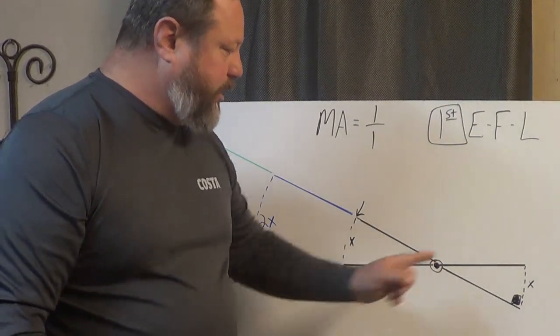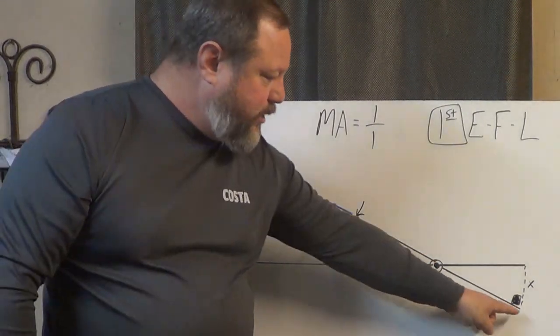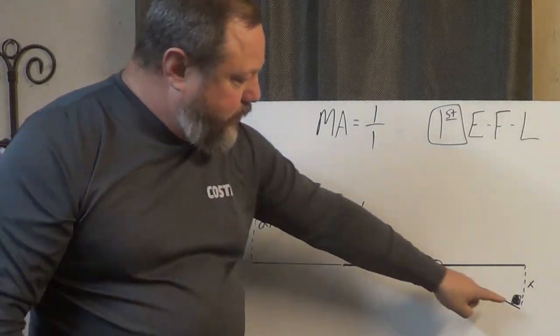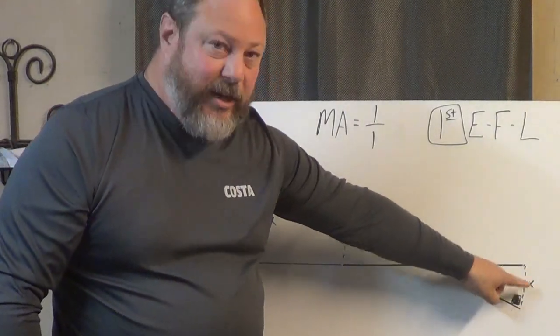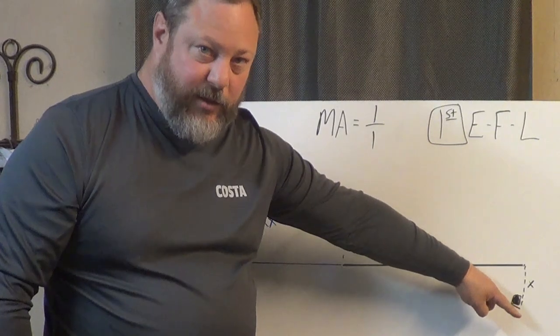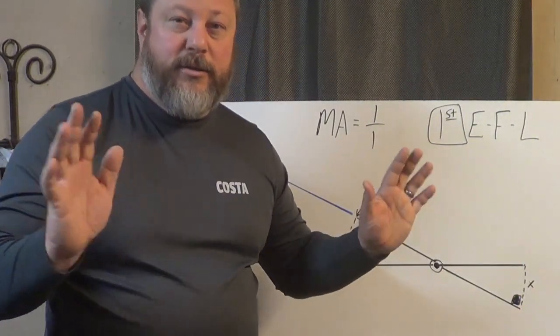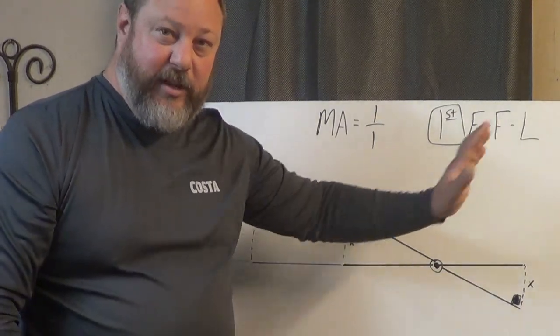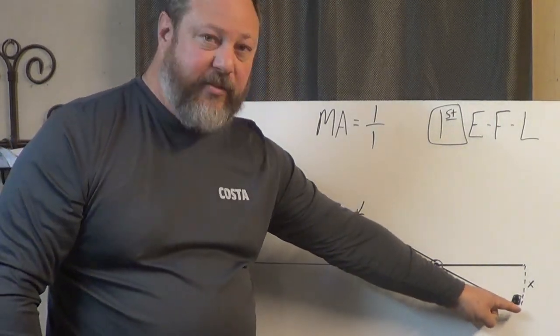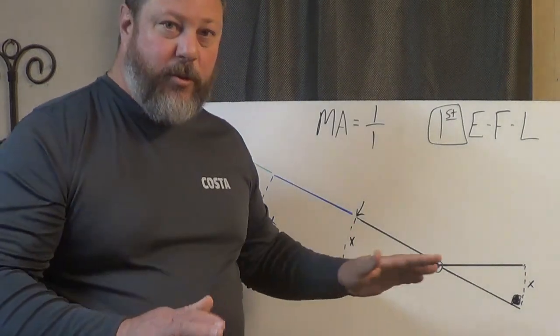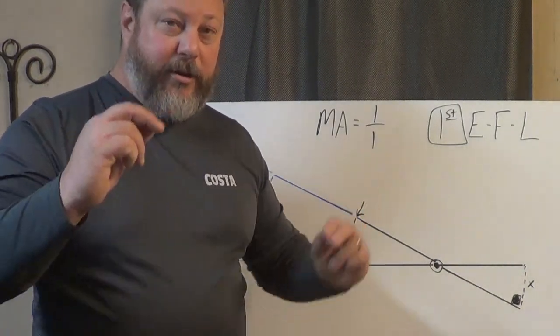One thing I didn't point out at first is this: with the one-to-one leverage ratio, the rotation is going to be identical. So that means whatever distance I've pushed down, my load is going to travel the same distance. The end of the load arm will go the same distance, so I'm just marking that as x, so it's just a variable.